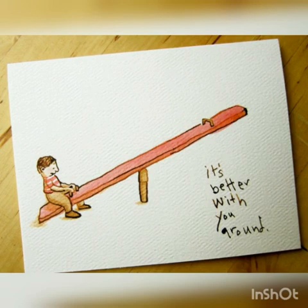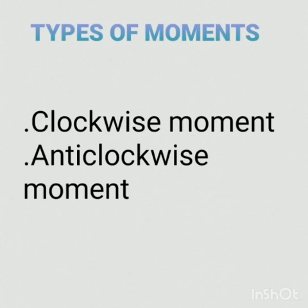For example, a person is sitting on a seesaw. The seesaw turns from its position — this means a moment is applied on it. Next, the types of moments. There are two types of moments: one is clockwise moment, and another one is anticlockwise moment. Because of the applying force, if the object turns in a clockwise direction, that is known as clockwise moment.